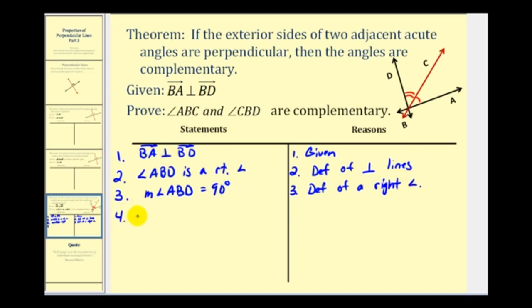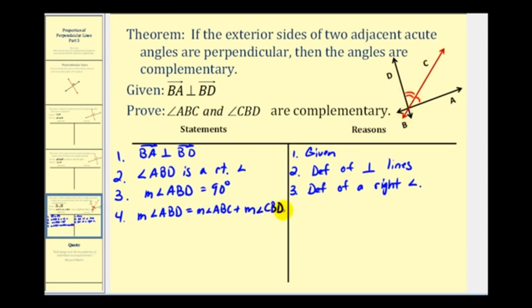We also know that the measure of angle ABD must equal the measure of angle ABC plus the measure of angle CBD. This is by the angle addition postulate.